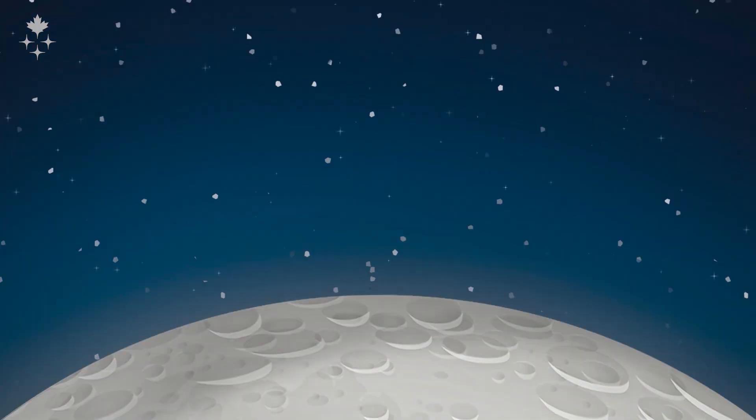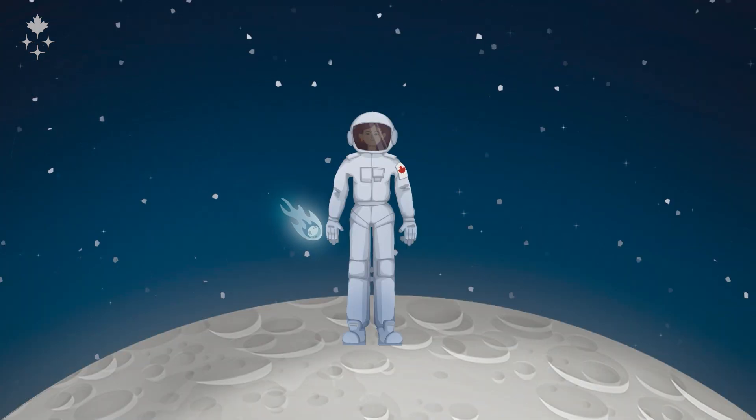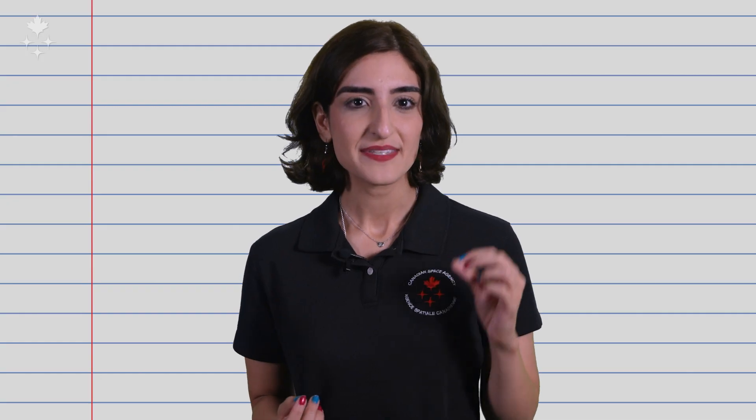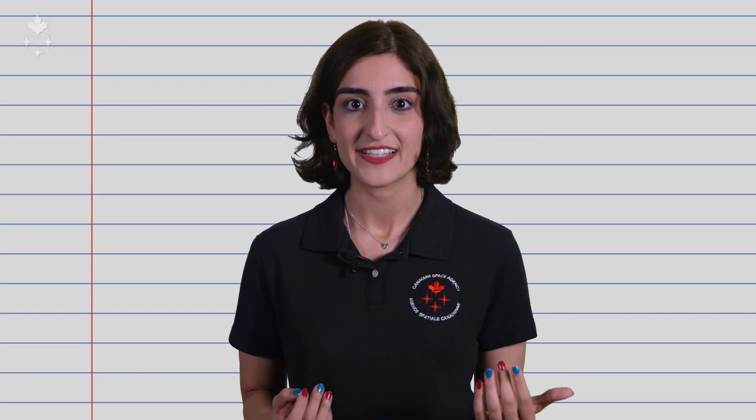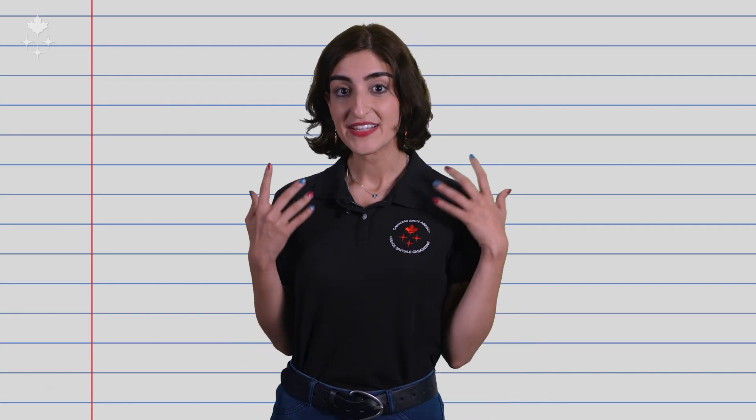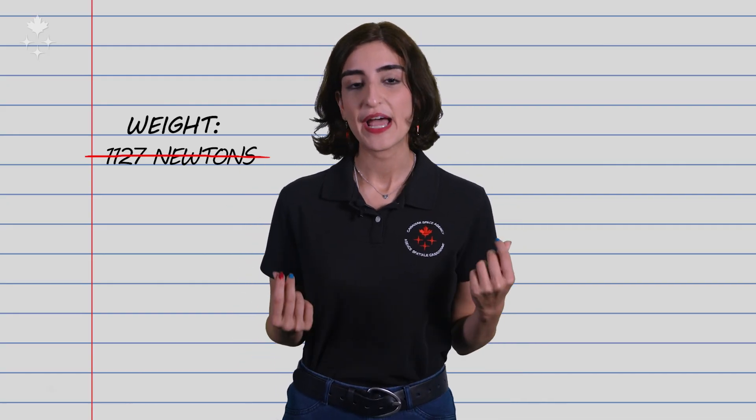So now, let's say that the astronaut is on the Moon. The Moon pulls them with six times less strength than on Earth because its gravitational field is six times weaker. So the astronauts' weight is six times less.